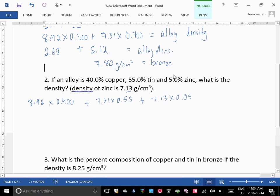Okay? So, actually, let's make it, yeah, that's fine. We better do that. That's going to be the density of this alloy. Alloy D, all right? So what's 40% of 8.92? 3.56. What's the 55% of 7.31? 4.02, all right? And what's 5% of 7.13? 0.36.